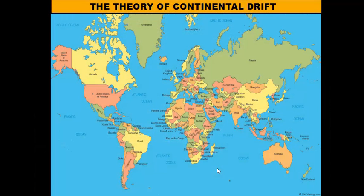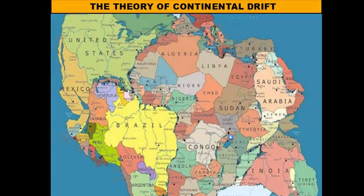Hi, everybody. Welcome to our video lesson on the theory of continental drift. Before we get started, what I'd like to do is take a look at a map of what the Earth looks like today. This map shows the present-day locations of all the land masses here on Earth. But what if someone told you that at one time the map of the Earth looked something like this, where the continents and land masses were all connected together as one big supercontinent?